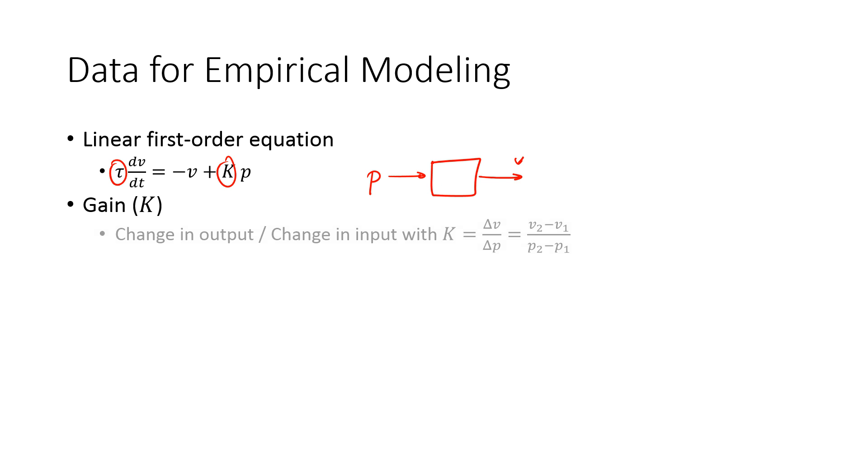So we have a gain. This gain, we can calculate this if we're at steady state, so this term is zero, then velocity is just going to be the gain times the p. And so the gain is just going to be delta v over delta p.